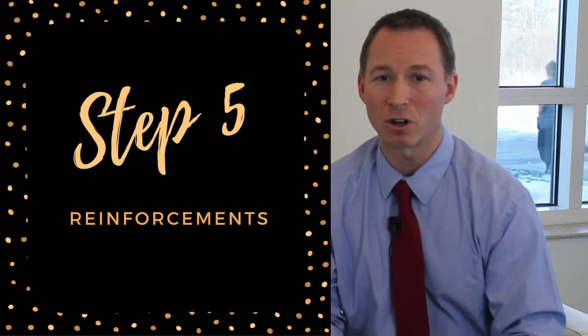Number five, reinforcements. Get an accountability partner. Get a friend or a family member or a coworker that's going to hold you accountable to actually doing what you said you want to accomplish. Because as we get into the new year, whether it's into January or February, now it's into March and all of a sudden we're back into our old habits. When we have somebody holding us accountable, it's much more likely that we're going to get accomplished what we want. Share it on social media. Make it public. When that happens, then holy cow, now we're accountable to everybody.